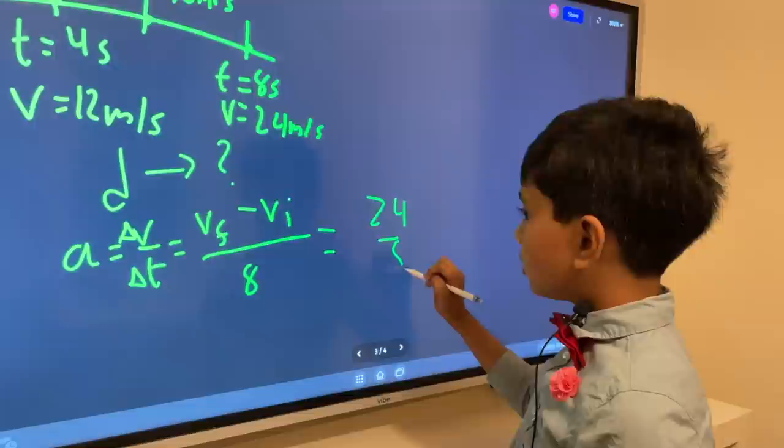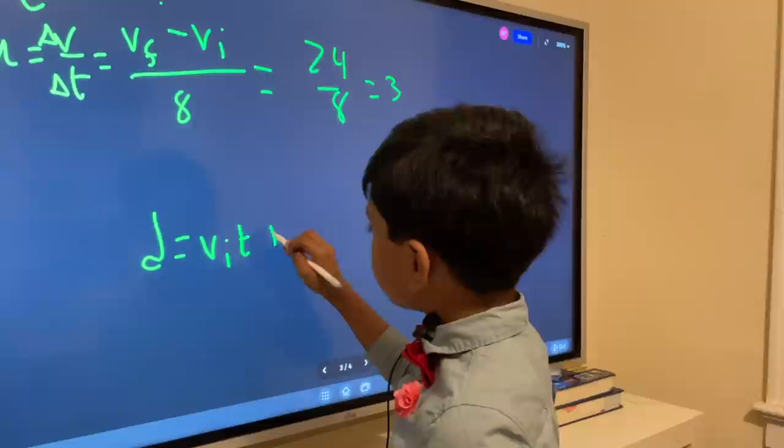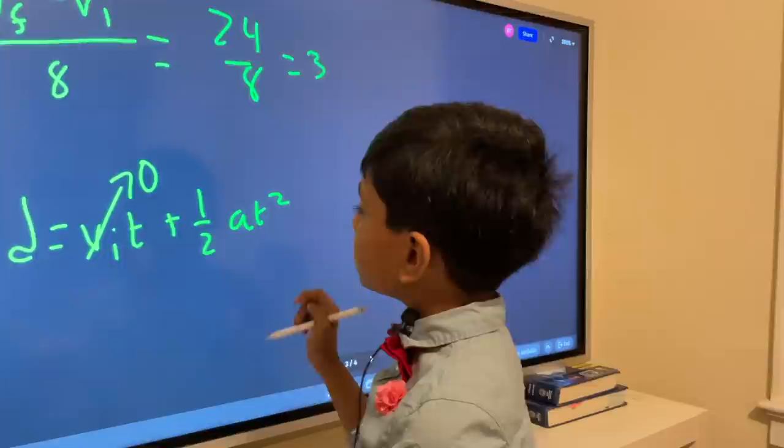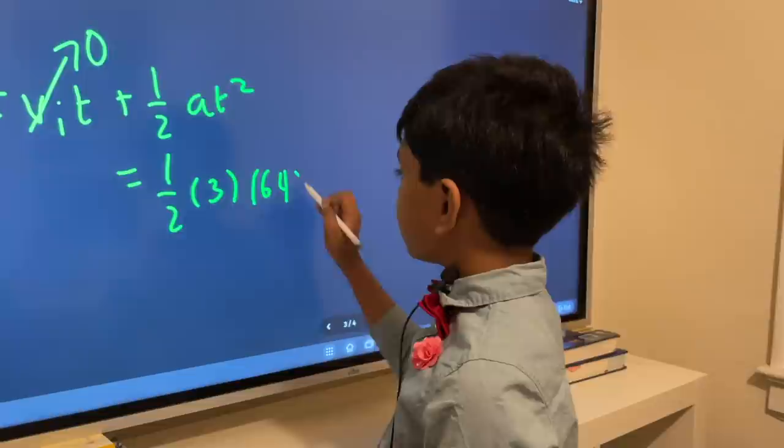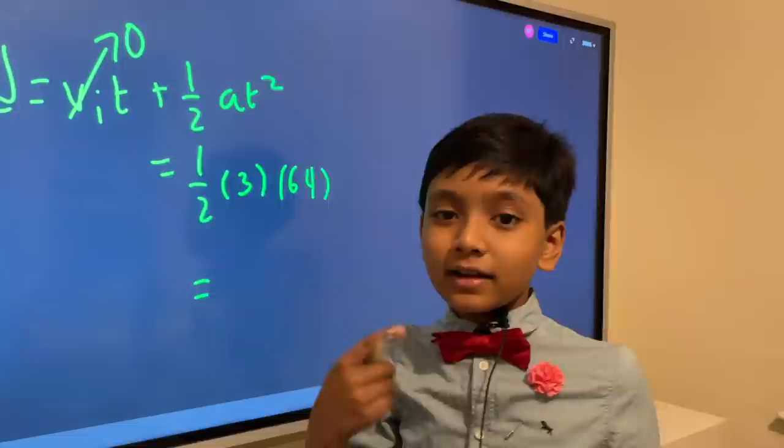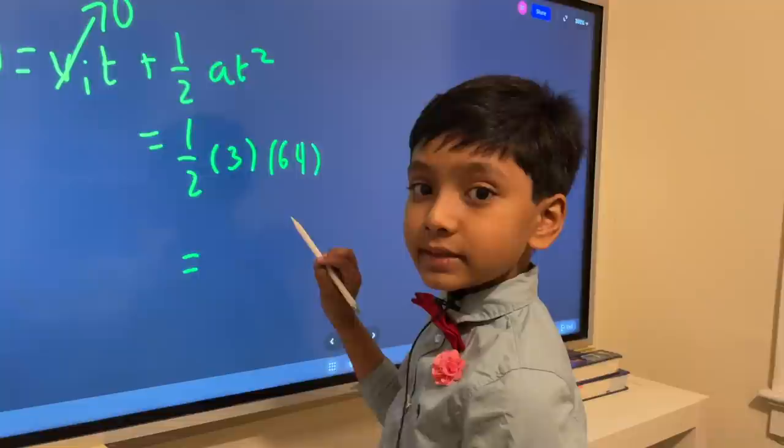D equals to VIT plus half AT squared, where VIT goes to 0, giving us half AT squared. It's just going to be 3 times time is 8 times 64. So that just gives us 3 times 32. What would that be? Post in the comments below. And actually, I have no idea, and I don't care, because it's actually just 96.